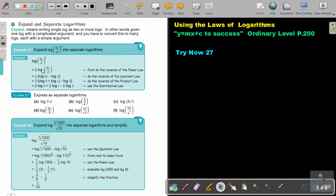Expand means writing single log as two or more logs. In other words, given one log with a complicated argument, you have to convert this to many logs, each with a simple argument. So expand log into separate logarithms. Do it step by step. First, if there's a power, bring it down. Then, the ones that's multiplied, write it, and the one that's divided as a subtraction, and separate the multiplication with a positive. Now you can just multiply the two in. Keep the two, put the bracket, because it's going to count for all this that's following in the bracket.